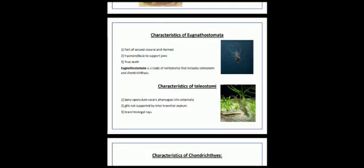Eugnathostomata. Some characteristics are: Part of second visceral arc formed hyomandibular to support jaws. True teeth.